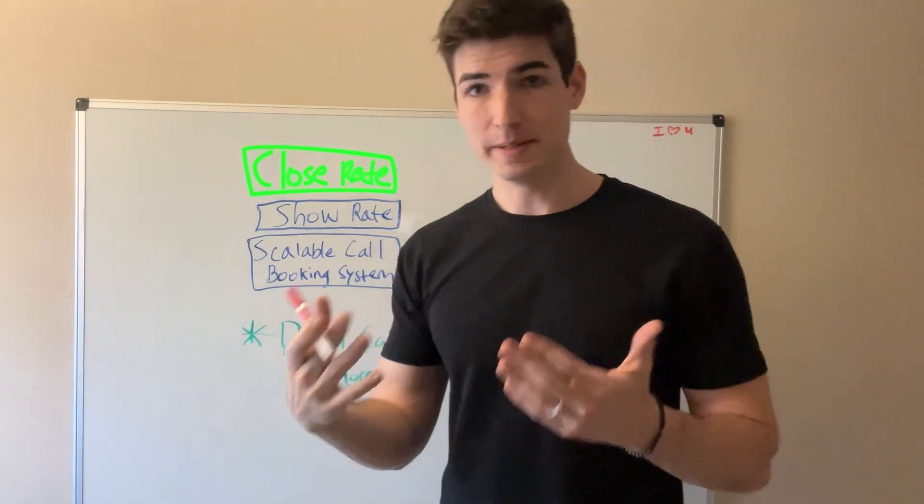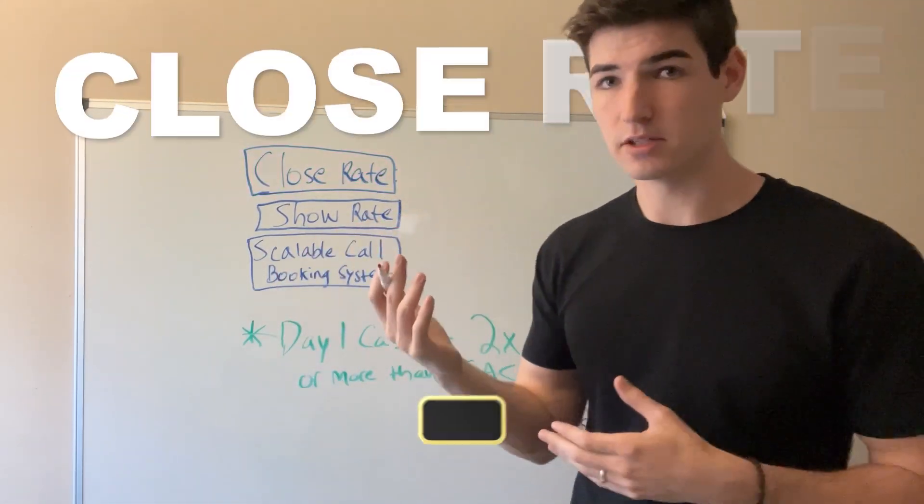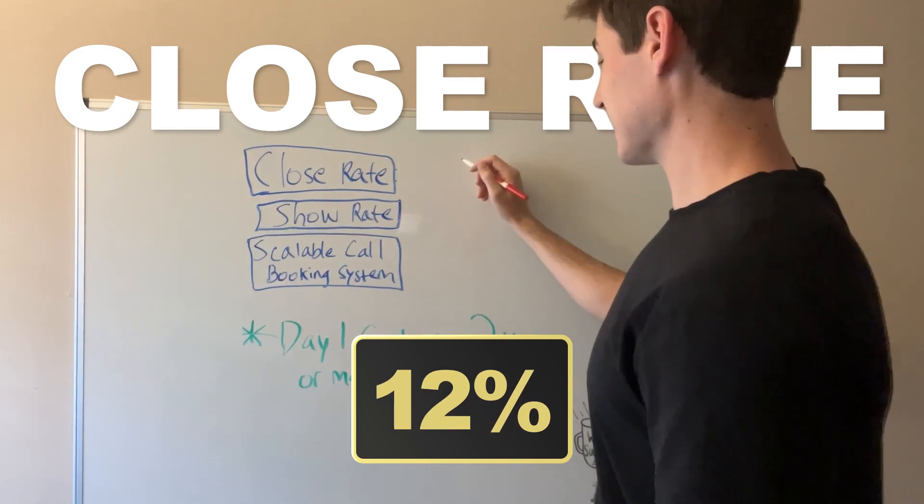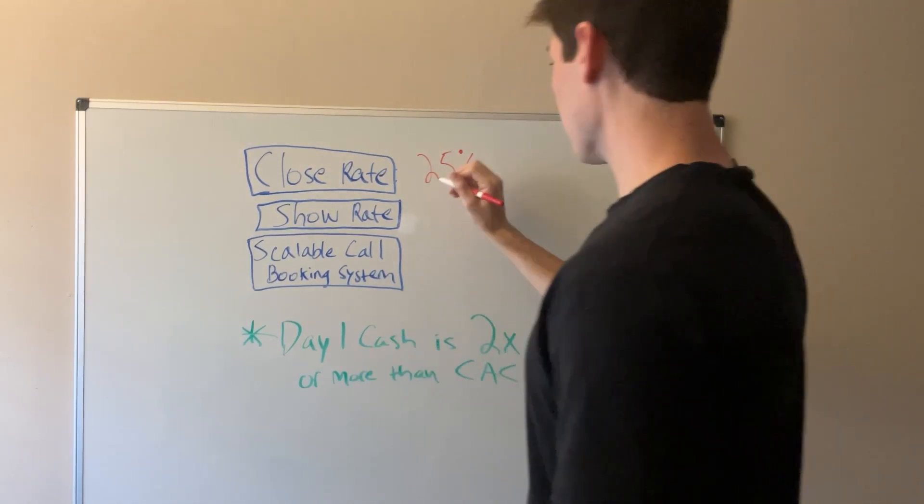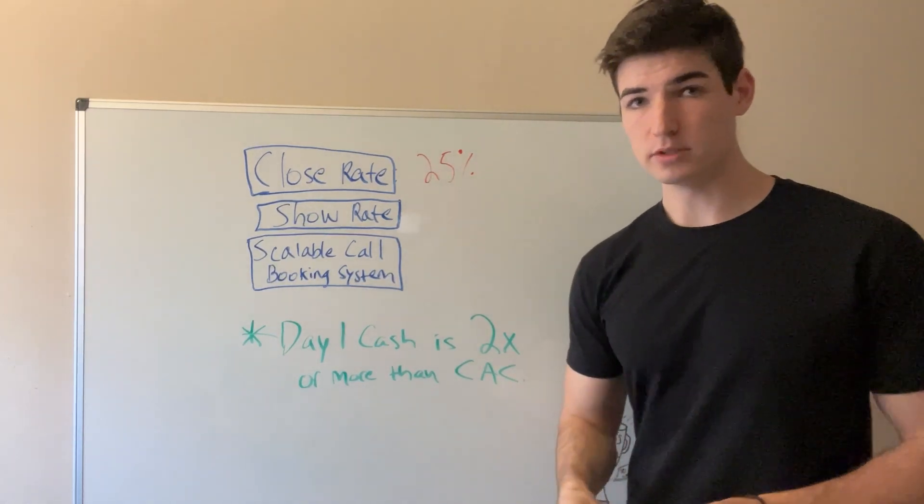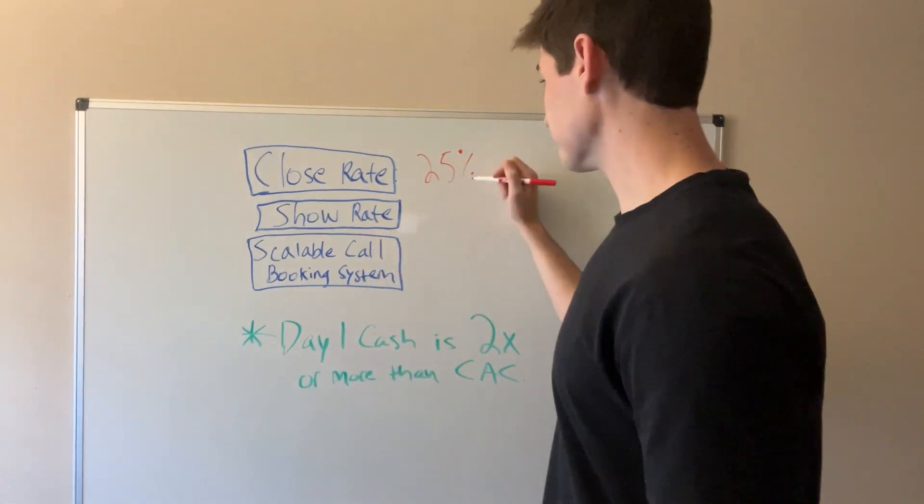First one is close rate. This is how many people you're getting on calls and actually closing as clients. The metric you want to get, the KPI, is at least 25%. If you have that, then you have a scalable sales system.